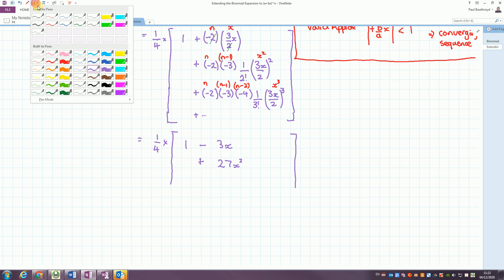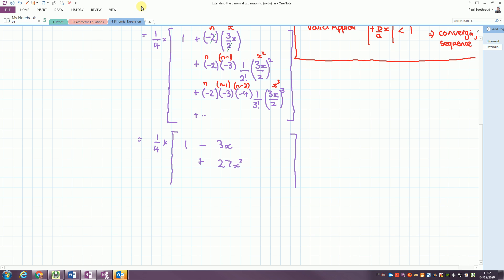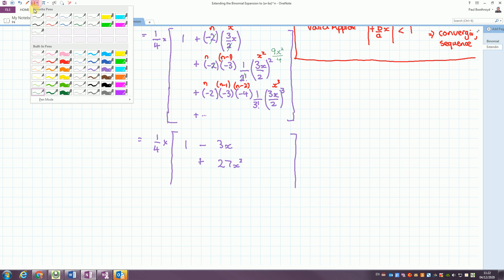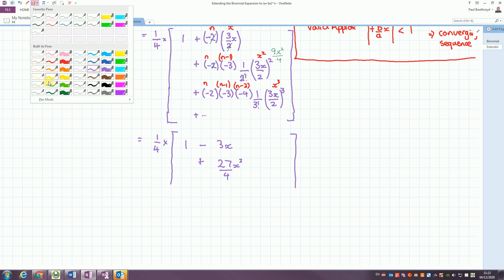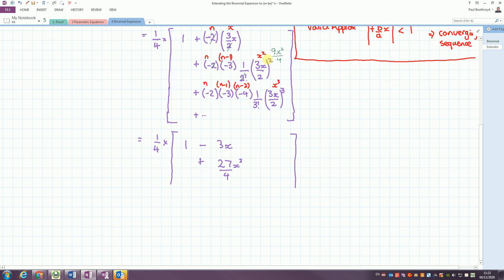And to get the 27x squared, the 2 factorial cancels with the 2. 3x squared is going to give me 9x squared over 4. I'm missing the divide by 4 here. Yes, I'm missing the divide by 4 in my answer. So they cancel and we're left with the minus 3 times that gives me a minus 3 times the minus 2. That's a positive 3 times the 9 is 27 over 4.